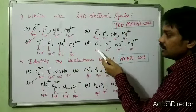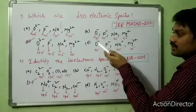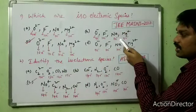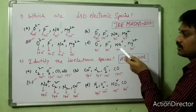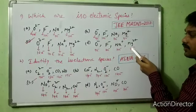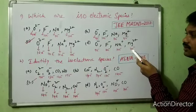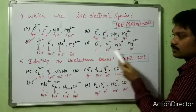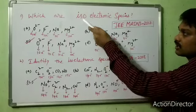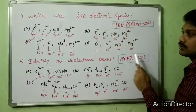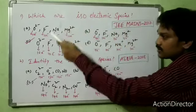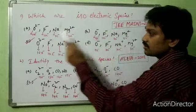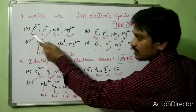Option D: O⁻ has 9 electrons, F⁻ has 10 electrons, Na⁺ has 10 electrons, and Mg²⁺ has 10 electrons. There is no complete similarity among all species. So option D is not isoelectronic. Among all four options, option C is the correct answer.